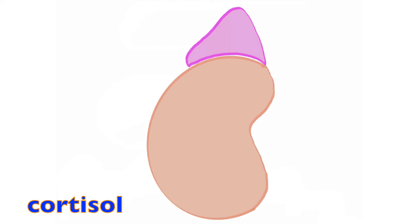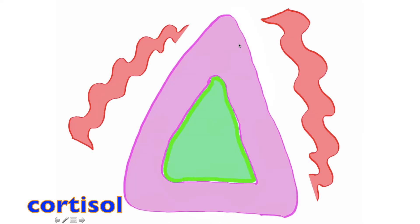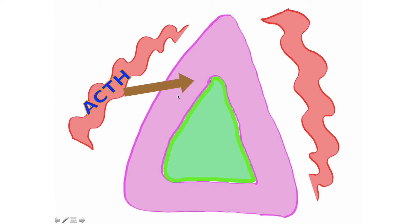The adrenal gland sits atop the kidneys, as we see in purple right here. If we look at a frontal section of the adrenal gland, it's broken down into the periphery, which is known as the adrenal cortex, and the interior, which is known as the adrenal medulla.